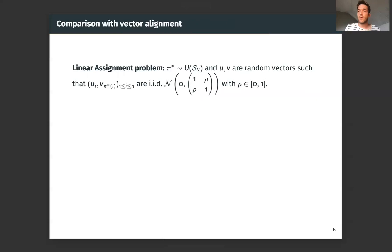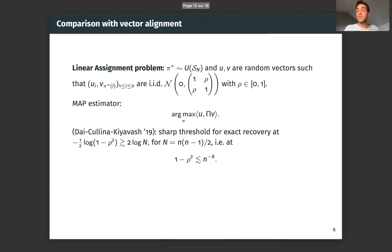So if we compare with the simpler case, which is vector alignment. So in this problem, we still have two random vectors. So no more matrices here, just random vectors that are correlated with this underlying permutation π*. And we take these vectors of size big N. The MAP estimator here is also a solution to a maximization problem, which is very simpler, because here you see that we only align vectors. And this problem is the linear assignment problem, which is solvable in polynomial time with famous algorithms, such as the Hungarian algorithm.